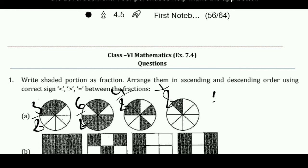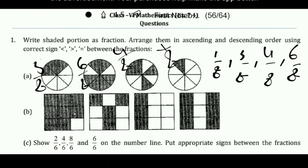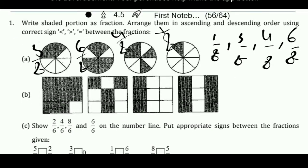Now we can arrange in ascending order. Ascending order means smaller to greater: 1 by 8, then 3 by 8, then 4 by 8, and then 6 by 8. This is the ascending order arrangement. Now you can do the opposite — that is known as descending order. Like this, the second question you can solve.